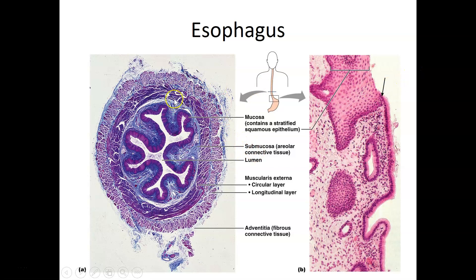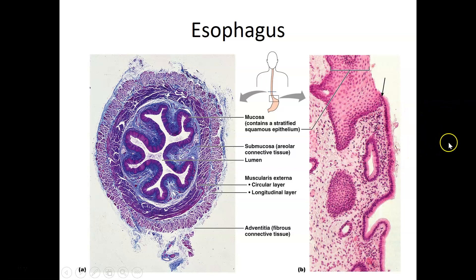There's a transition in the mucosal epithelium from the esophagus to the stomach. Traveling down the esophagus, we see the stratified squamous epithelium, and then right at the stomach there's a very dramatic transition — stratified squamous epithelium immediately becomes a simple columnar epithelium, which is what lines the inside of the stomach.